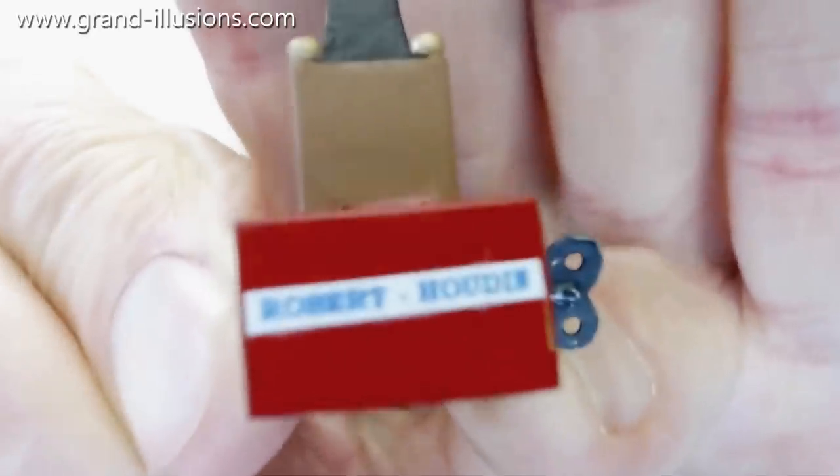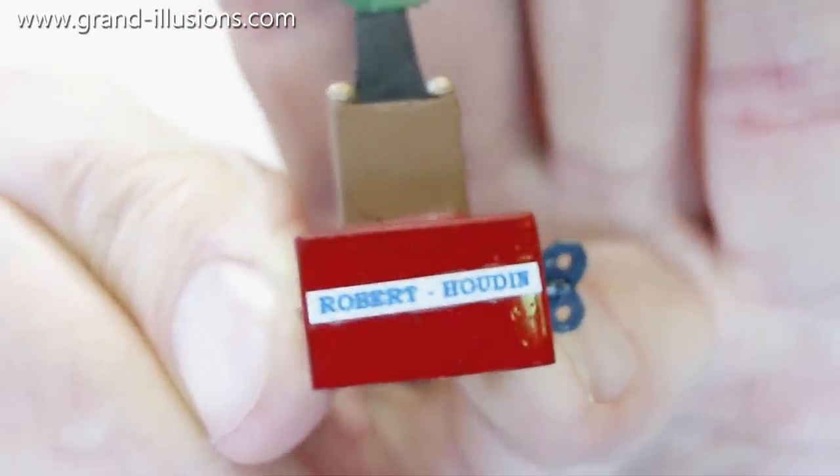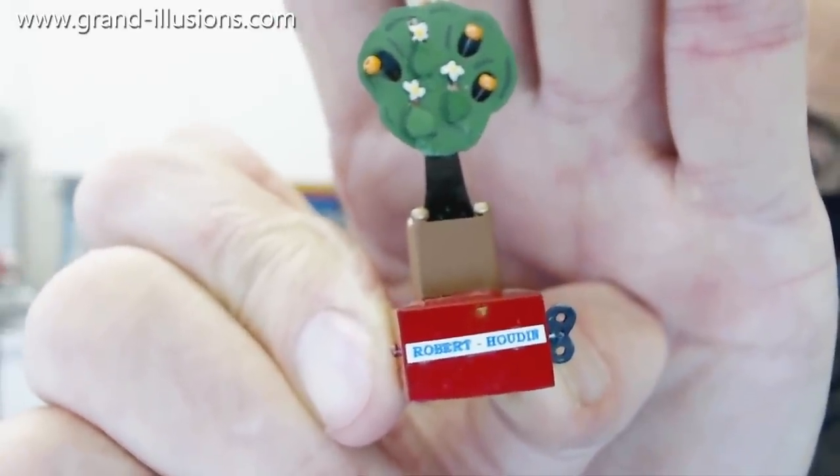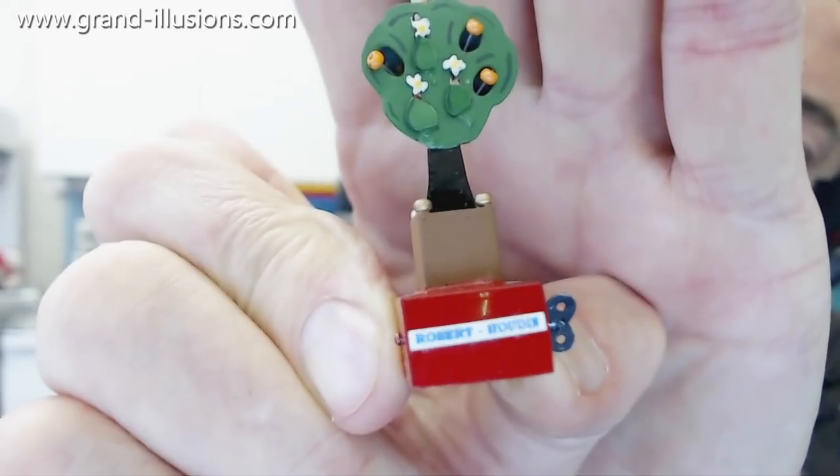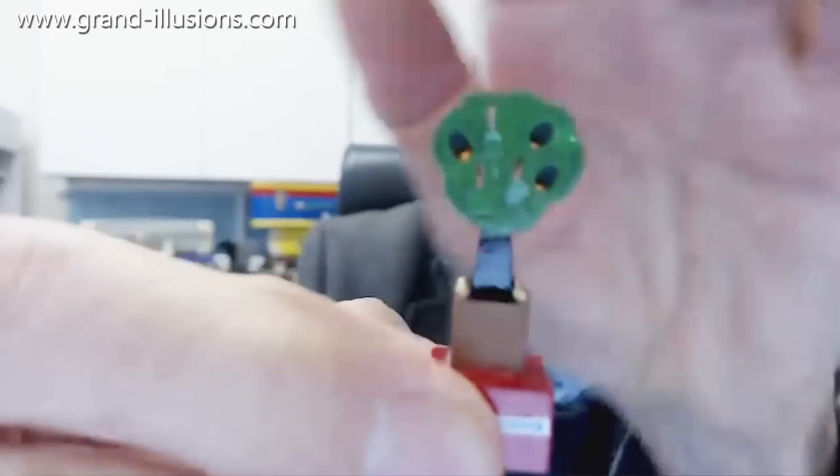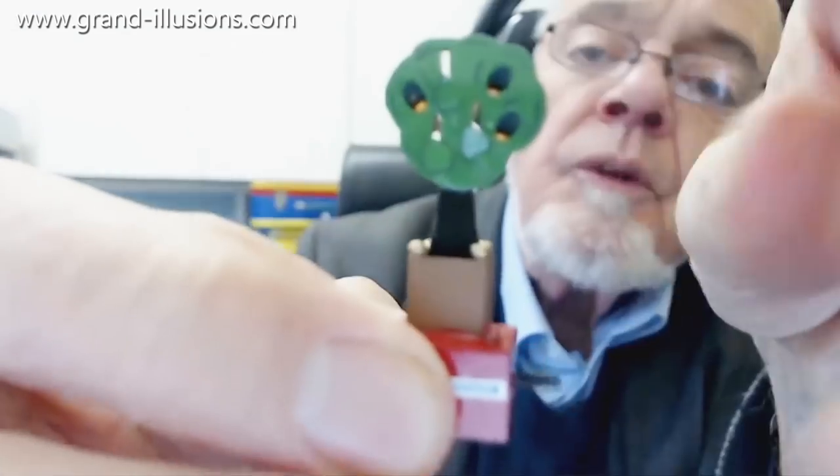This is a famous Robert Houdin magic trick from 1890 in Paris, where he brought on stage a mechanical touchy. They brought onto the stage, let me just turn this a little bit, that's how it starts, with the thing in blue.